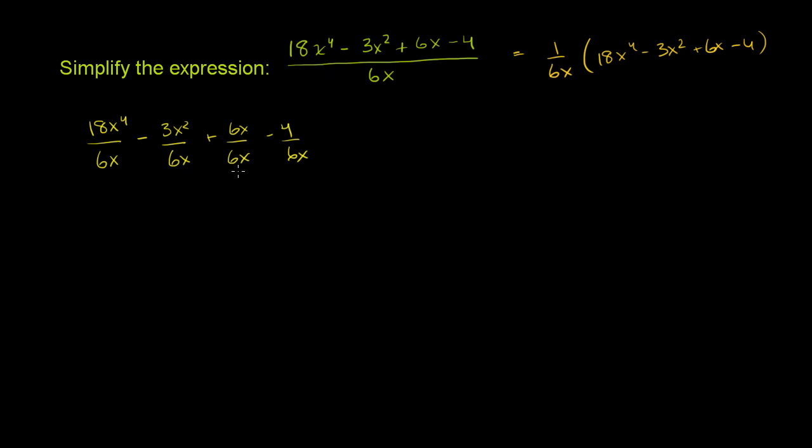Whatever seems to make sense for you, they're all equivalent. They're all logical good things to do to simplify this thing. Now, once you have it here, now we just have a bunch of monomials that we're dividing by 6x. And here, we can just use exponent properties.